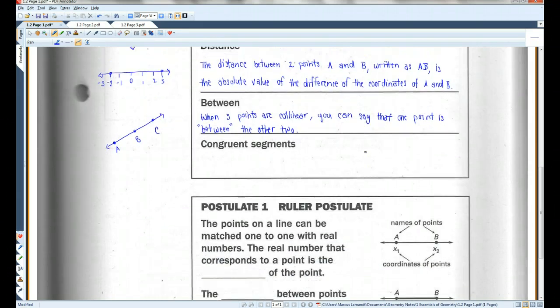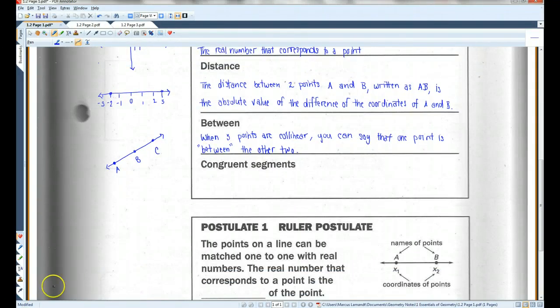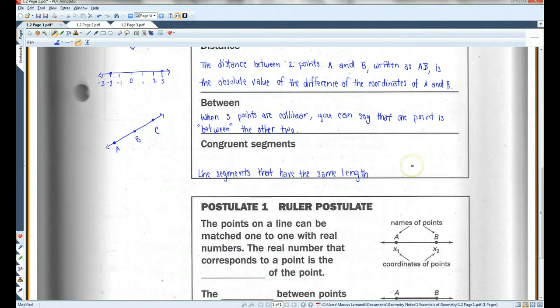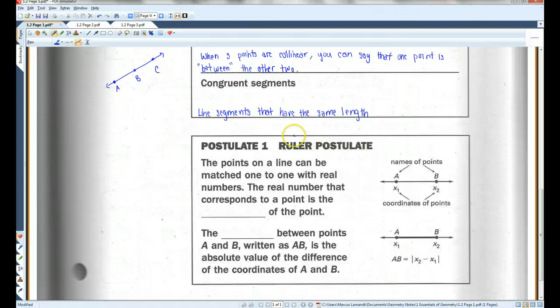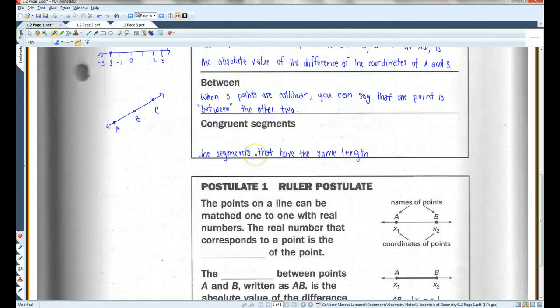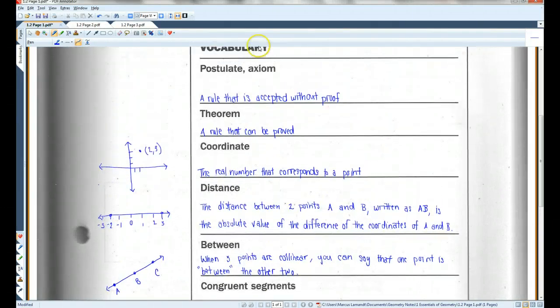Congruent segments - segments are congruent if they have the same length. Postulate 1, the Ruler Postulate. Now remember, a postulate is a rule that everyone just accepts without proof.